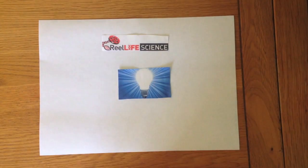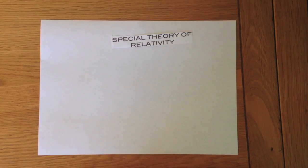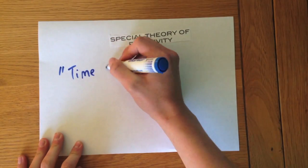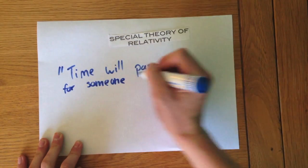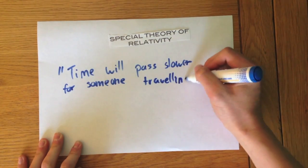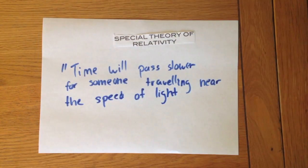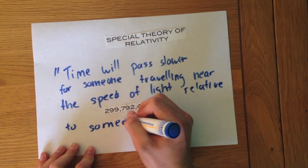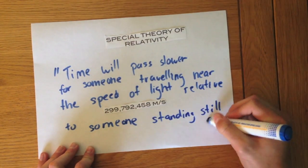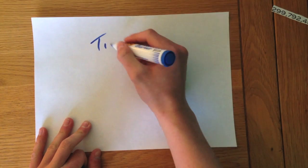Our project for Real Life Science is using light to demonstrate the Special Theory of Relativity. Simply put, the theory showed that time will pass slower for someone travelling near the speed of light relative to someone who is standing still. This physics phenomenon is known as time dilation.